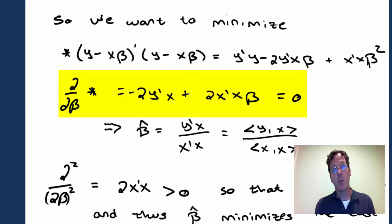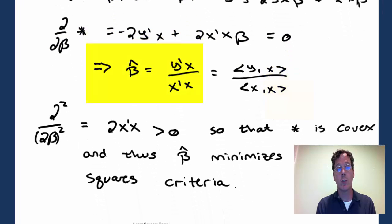Taking a derivative with respect to beta, we get negative 2y transpose x plus 2x transpose x beta. Setting that equal to 0 yields the solution that beta hat is y transpose x divided by x transpose x, or the inner product of y and x divided by the norm of x squared.